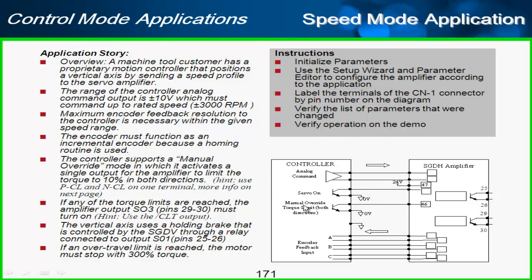They don't need any absolute functionality for the absolute encoder. The controller uses a manual override mode that activates a single output — that input will be used in the Sigma 5 to limit the torque to ten percent in both directions. If any of the torque limits are reached, the amplifier should turn on an output that can be wired back to the controller input so the controller can tell if it's hit the torque limit.